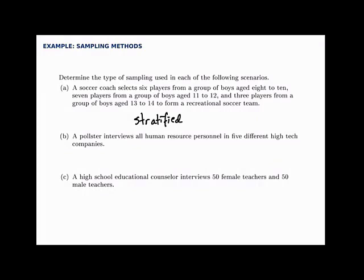Generally with stratified sampling, we select the same number from each group. In this case, the coach selected six from one group, seven from another, and three from another — but generally with stratified sampling we select the same number. In the second part, a pollster interviews all human resource personnel in five different high-tech companies. The pollster selected five companies and chose all human resource personnel from a few of those groups. Because the pollster selected everyone from a couple of full groups, that's cluster sampling. If they had selected a few from all the groups, that would be stratified sampling.